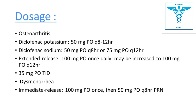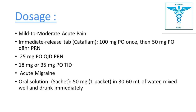For dysmenorrhea, the initial dose is 100 mg orally once, then 50 mg every 8 hours depending on need. For mild to moderate acute pain, an immediate release tablet of 100 mg orally once, then 50 mg or 25 mg every 8 hours, or 25 mg to 35 mg orally three times a day.